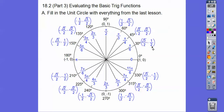Cosine comes before sine in the alphabet. The numerators go 3, 2, 1 for cosine and 1, 2, 3 for sine — they're square roots of 3, square root of 2, and square root of 1 which is just 1, all over 2. In quadrant 2, the cosines are negative and the sines are positive. In quadrant 3, everything's negative except tangent, since tangent is sine over cosine. In quadrant 4, only the cosines are positive, so the sines are negative.